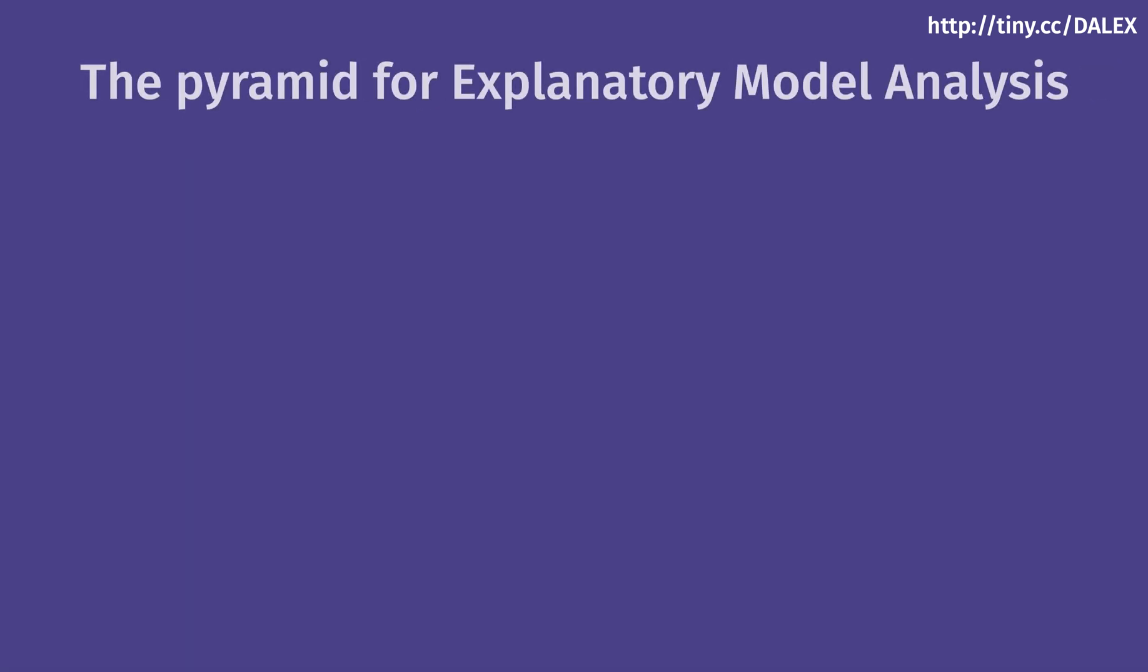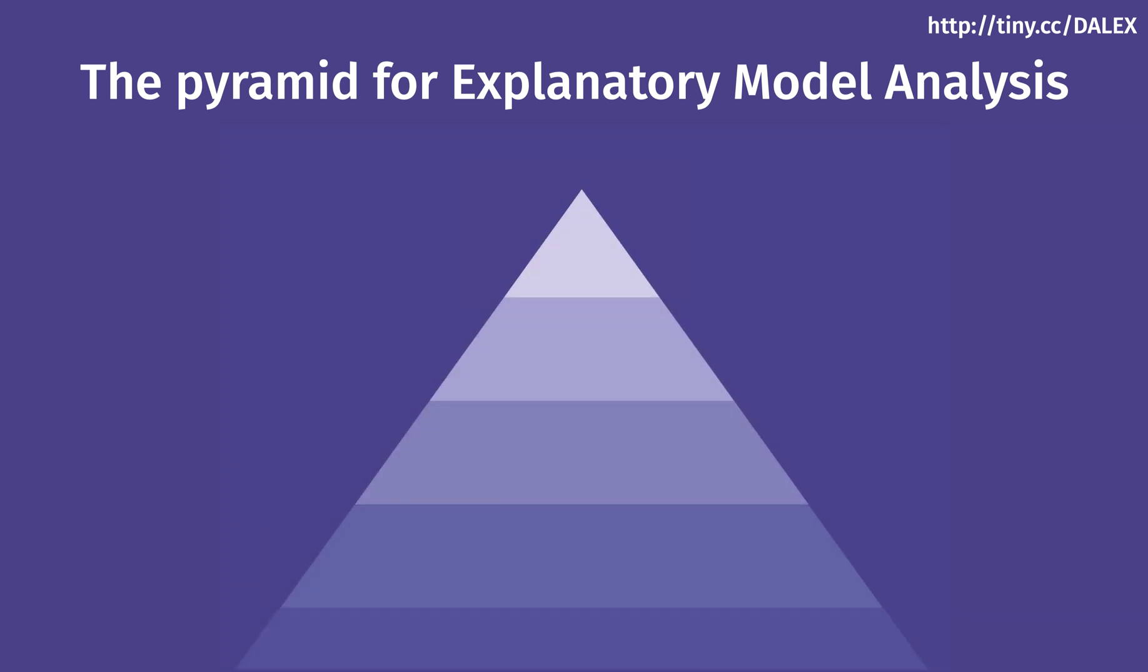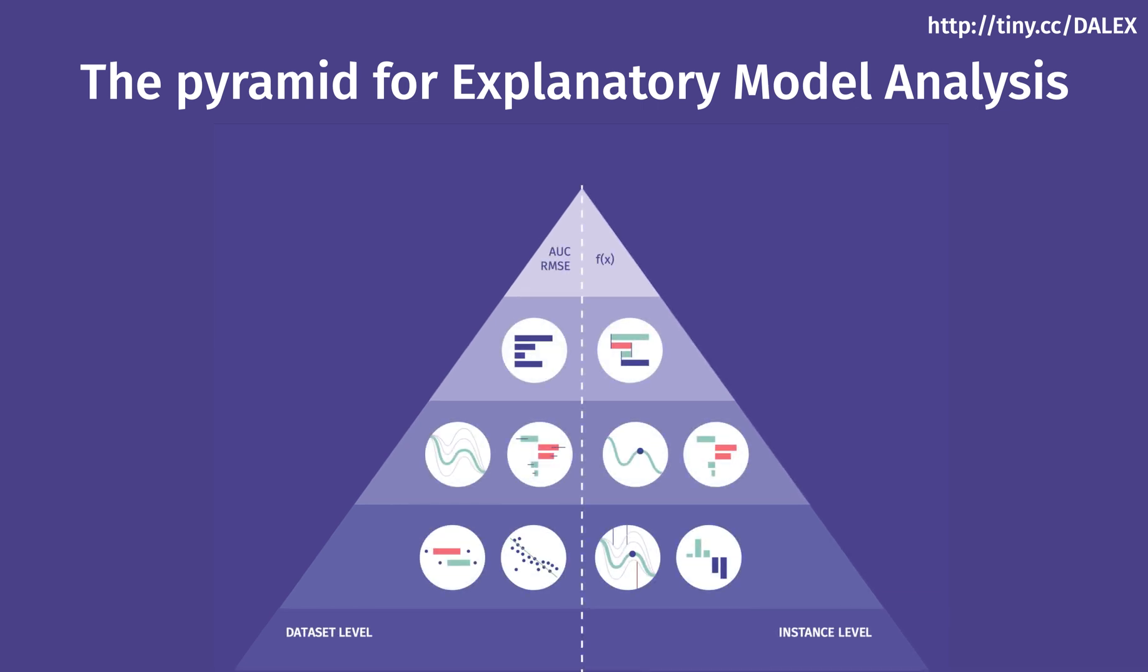The Pyramid for Explanatory Model Analysis. The methods we will discuss in this podcast are arranged in a pyramid-like ontology. We will discuss two classes of methods. The first one focuses on the analysis of the model result for a single observation. These methods are called instance-level explanations or local explanations.